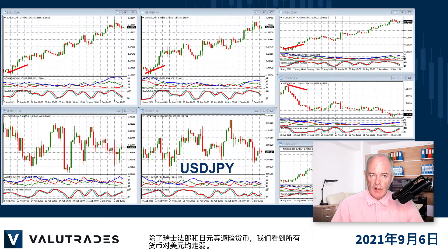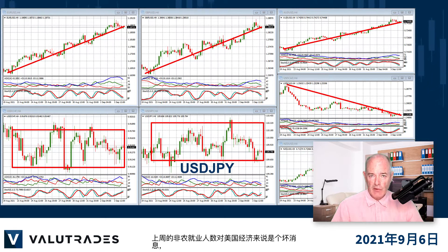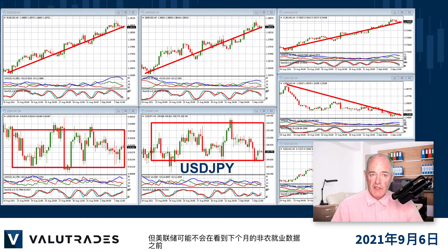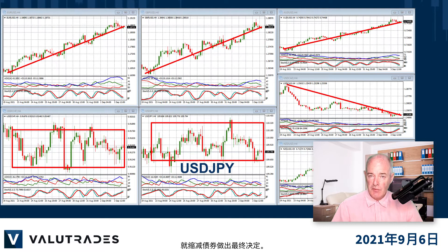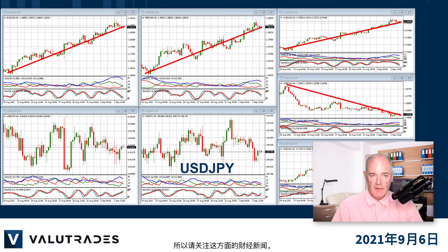We see US Dollar weakness on all pairs except the safe haven pairs like Swiss franc and the Japanese Yen. Last week's non-farm payrolls were bad news for the US economy, but the US Federal Reserve will probably not make a final decision about bond tapering until it sees next month's NFP data. In the meantime, they will be concentrating on inflation to see if it is transitory, so watch for the financial news on this.